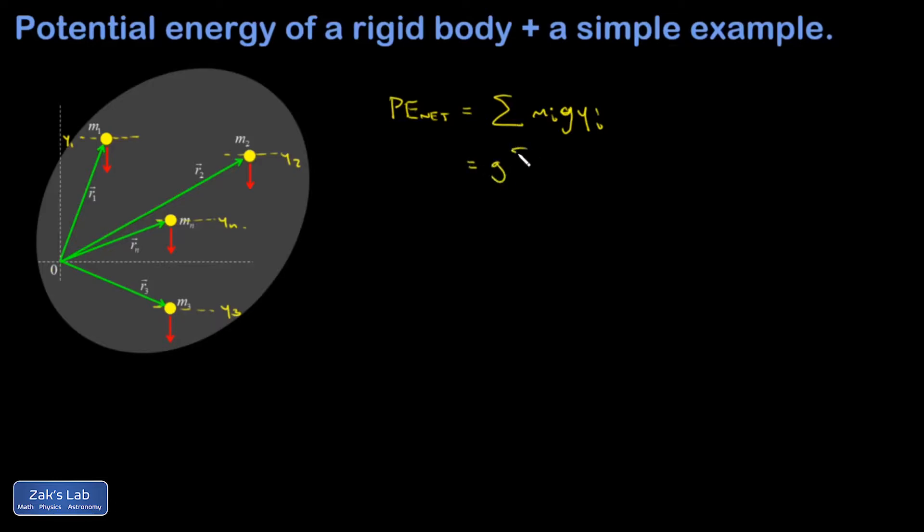So that means the G can come out in front. And then I end up with this familiar expression, the sum of Mi times Yi. That looks like part of the center of mass formula for the center of mass Y-coordinate.